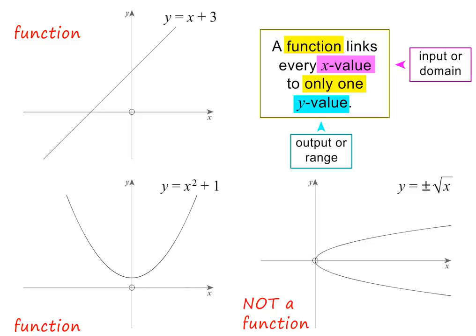This parabola lying on its side is not a function. And the reason is, if we take any x value in the domain, say x equals 9, it is clear from the graph that it is linked to two y values. In this case, the values are 3 and minus 3.